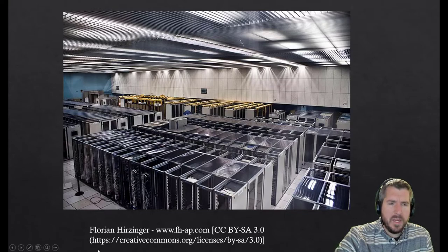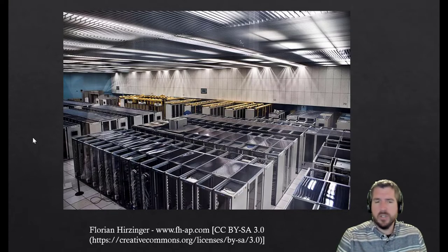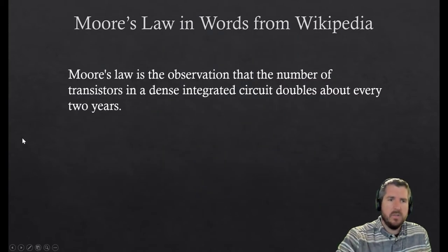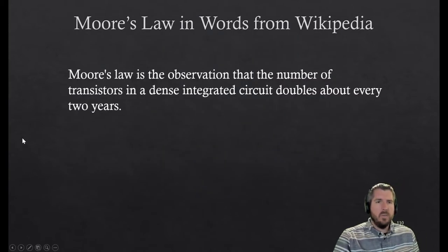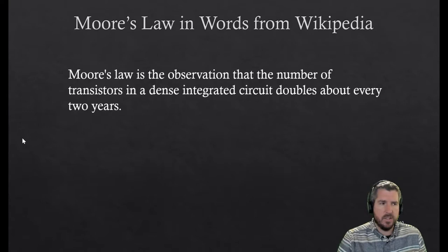What we want to think about is, we have all this high performance computing. We're going to think about applications for that now. But let's think about the future of high performance computing. Before we think about the future, we have to think about the past. If we think about Moore's Law, this is from Wikipedia. Moore's Law is the observation that the number of transistors in a dense integrated circuit doubles every two years. What does that mean really?